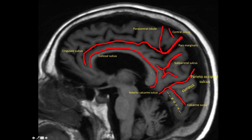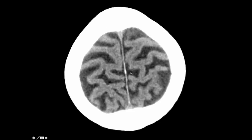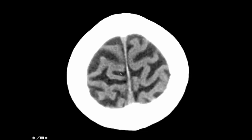The anterior calcarine sulcus separates the lingual gyrus from the continuation of the cingulate sulcus. Now let's identify some of the structures seen on the midline sagittal image on the axial image. Moving from inferior to superior, the pars marginalis is seen as a deep cleft in the midline — starting inferiorly it appears like a drooping moustache, then a straight moustache, and on the most superior images like a smiling moustache, forming a basket shape called the pars basket. As seen on the midline sagittal image, the central sulcus is anterior to the pars basket and dips into it.